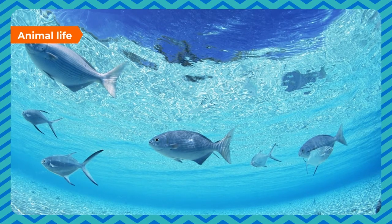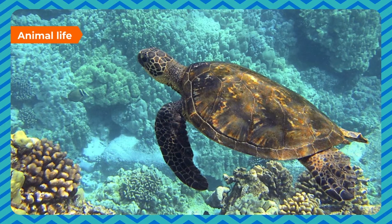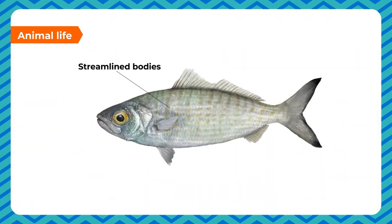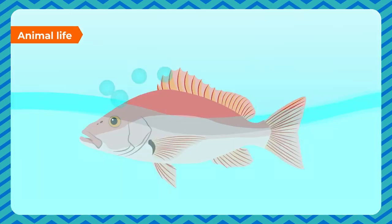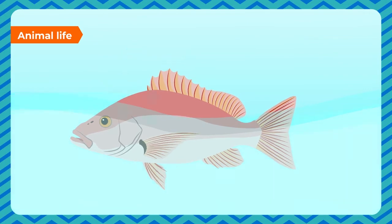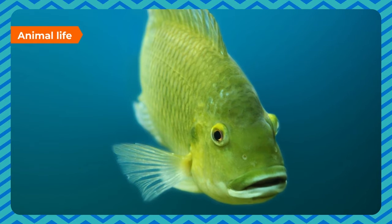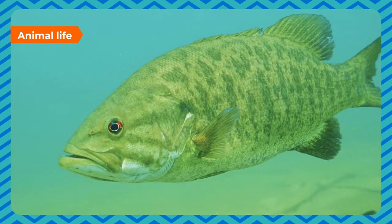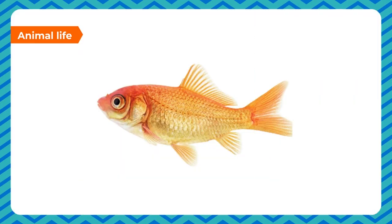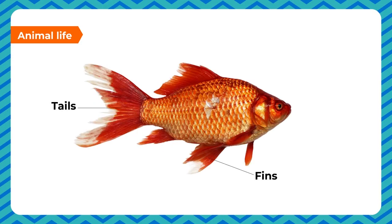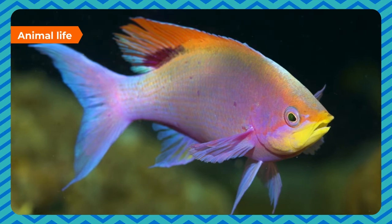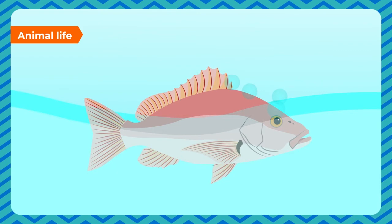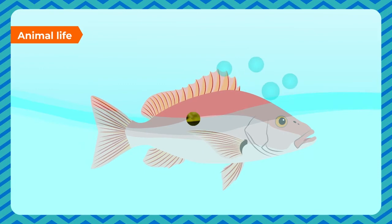Fish and other water animals have streamlined bodies, rounded in front and narrow at the back, which reduces water resistance and helps them swim fast. Their bodies are covered with scales and mucus to make them waterproof, protecting the fish and easing movement through water. They have gills for breathing underwater, flat fins and tails for movement, changing direction and keeping balance in water, and an air bladder that helps them swim. Frogs usually live in pond habitats, can live both in water and on land, have strong hind legs for leaping and catching prey, and webbed feet that help them swim.